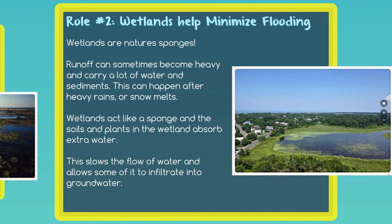The second role that wetlands play is wetlands help minimize flooding. Wetlands are nature's sponges — if you're going to remember anything about wetlands, it's that wetlands act like a sponge. Runoff sometimes carries sediments; when water flows really fast, it has more energy to pick up more sediments — dirt, rocks, and soils. The faster the flow, the more sediments it carries. When that hits a wetland, the wetland acts like a sponge, slows down that flow of water, and absorbs some of it. Some of it will also infiltrate into the groundwater underground, minimizing flooding.